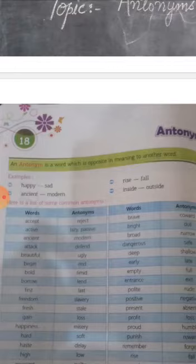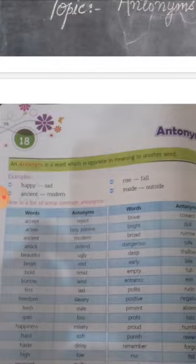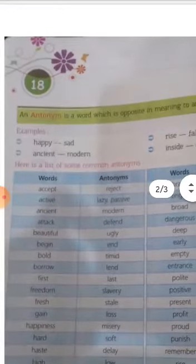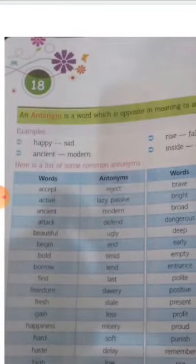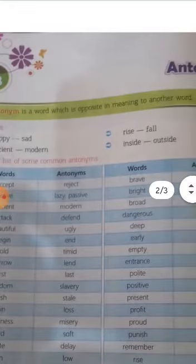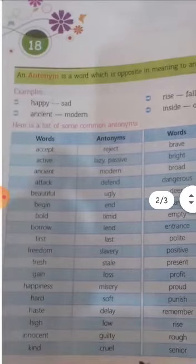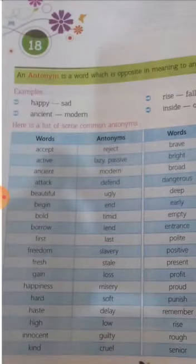Toh use hum kya kehenge? Antonyms kehenge. Ek tarah se aap yeh keh sakte hain ki opposite word ko hi antonyms kehte hain, okay? For example: happy-sad, ancient-modern, rise-fall, inside-outside. Clear? So here is a list of some common antonyms.